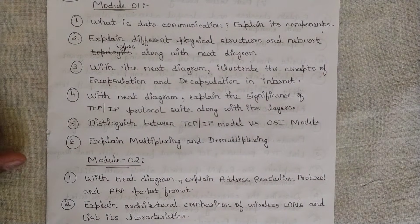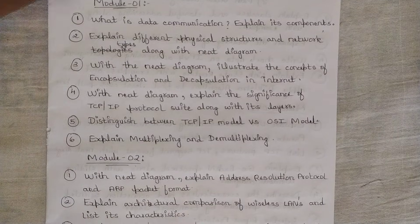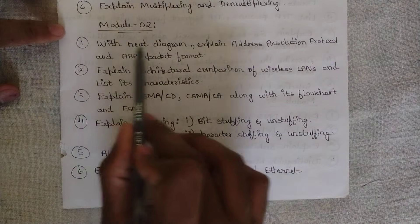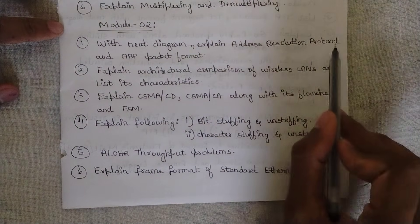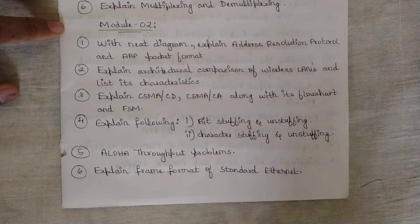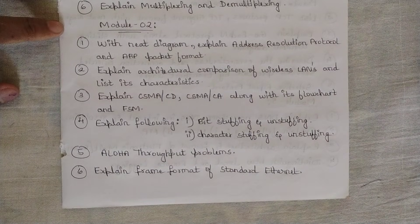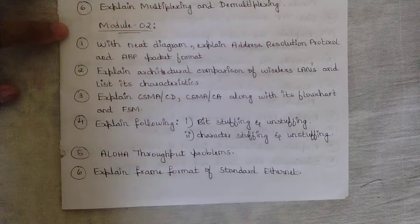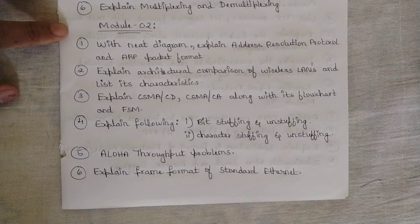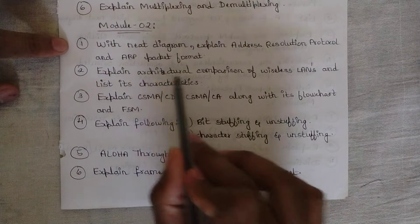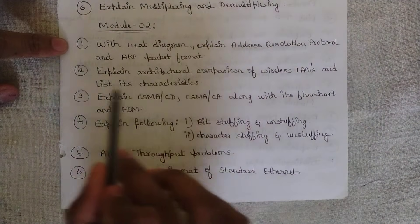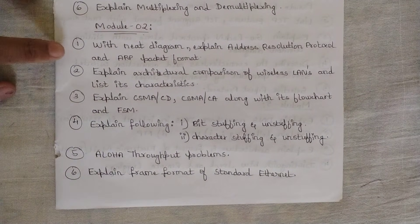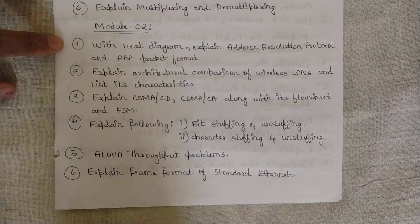Now let's move to Module 2. I've shortlisted around six questions. The first question is: 'With neat diagram, explain the Address Resolution Protocol and the ARP packet format.' I've covered this in one of my Module 2 videos — check the playlist. There are high chances this question will be asked. The second question is: 'Explain the architectural comparison of wireless LANs and list its characteristics.' This has been repeated multiple times in previous year question papers and the model paper.